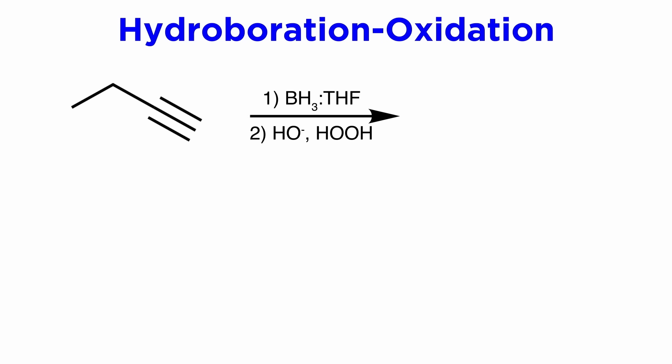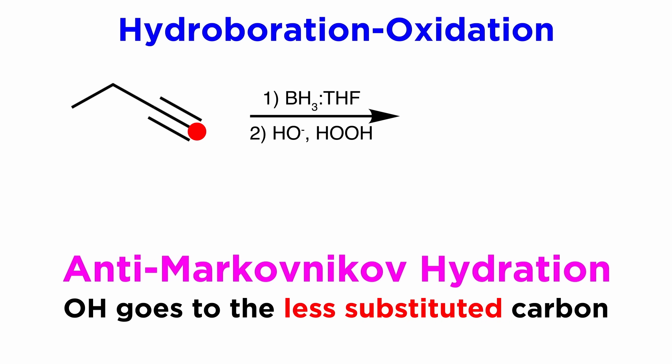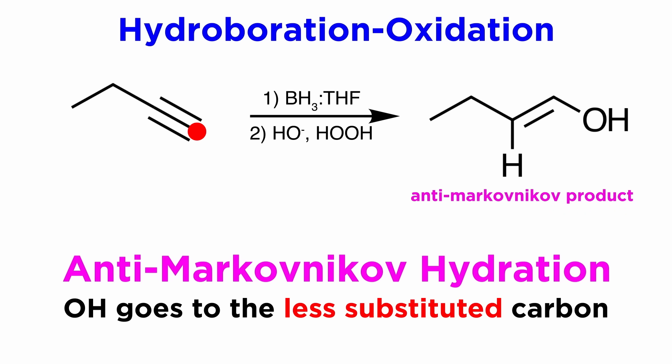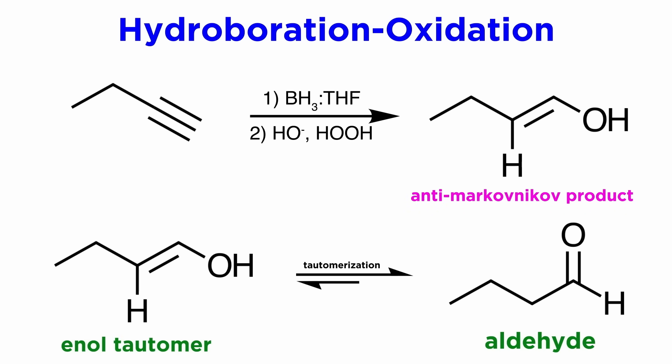But for a terminal alkyne, we will get something specific. Since this reaction is anti-Markovnikov, we will get the hydroxyl on the less substituted carbon, so we get this enol, and then tautomerization will yield the aldehyde.